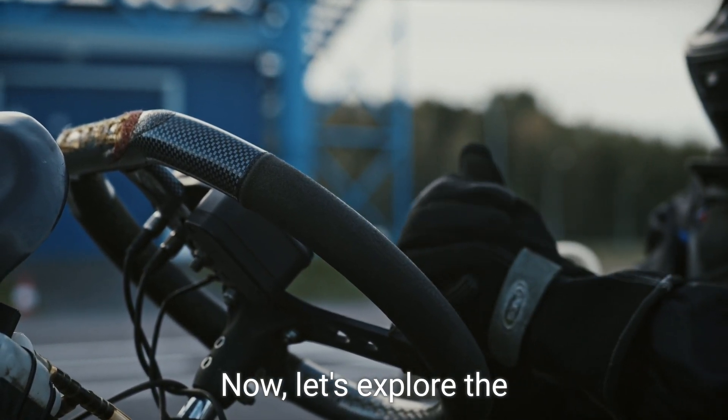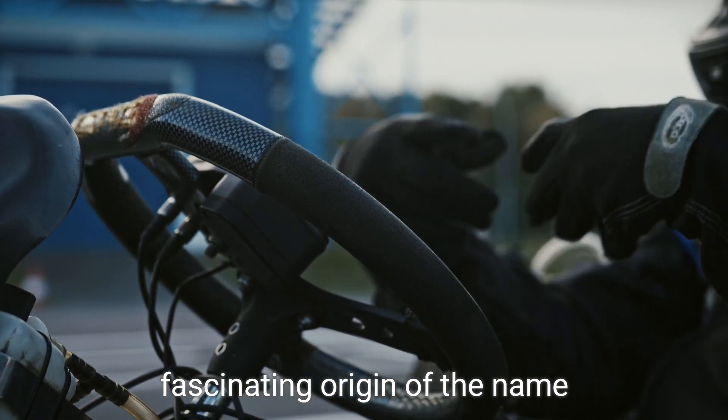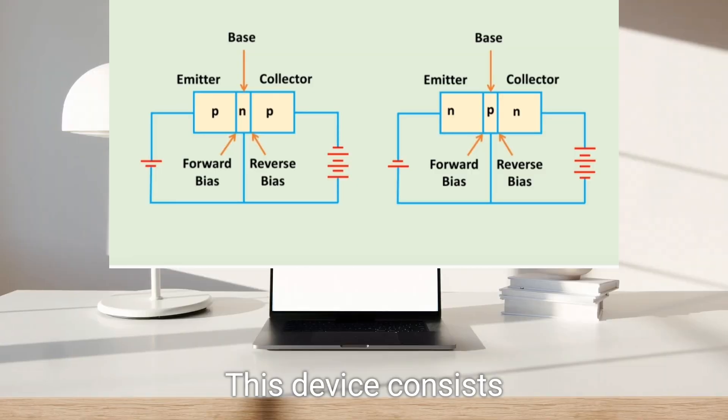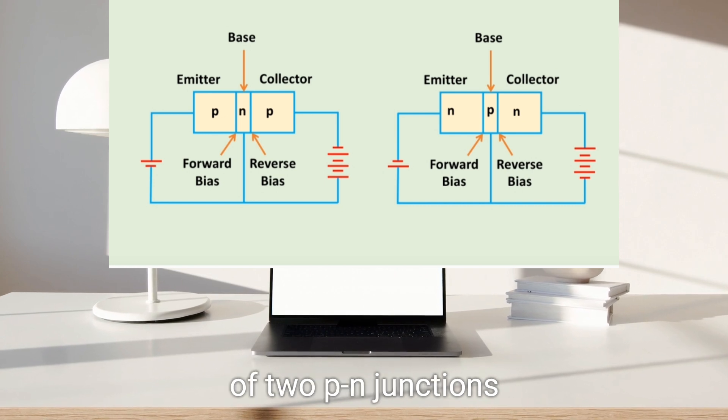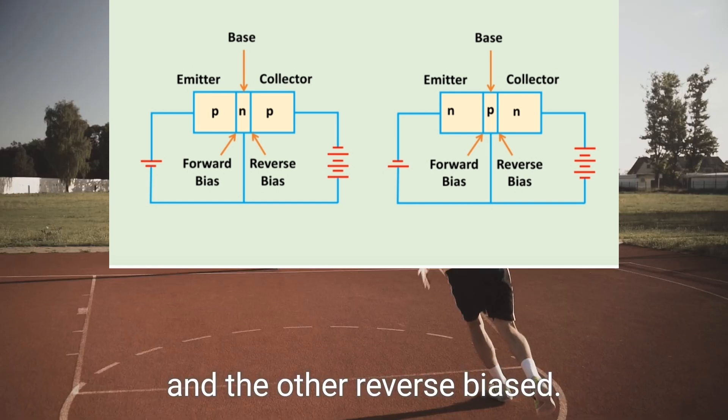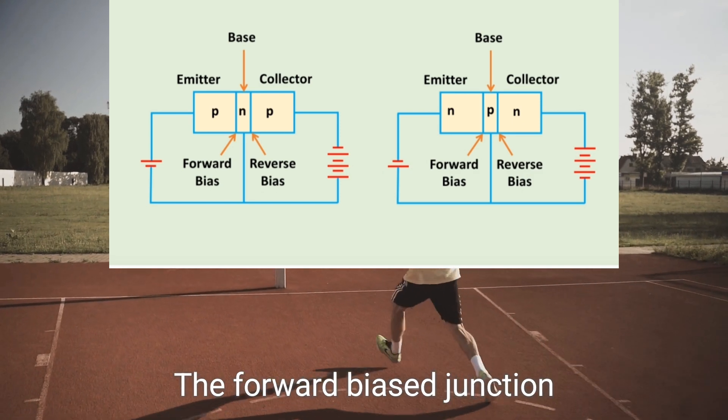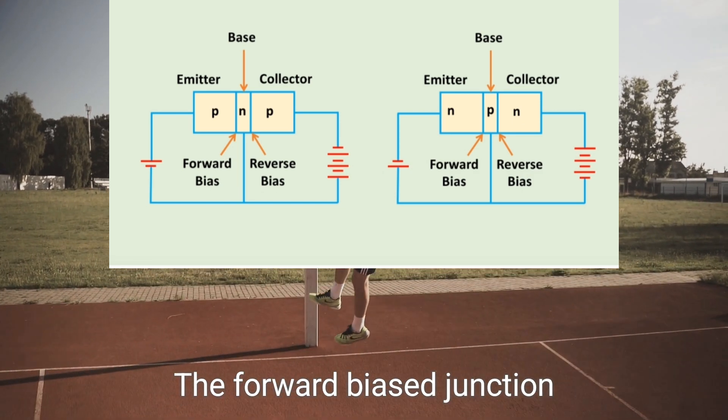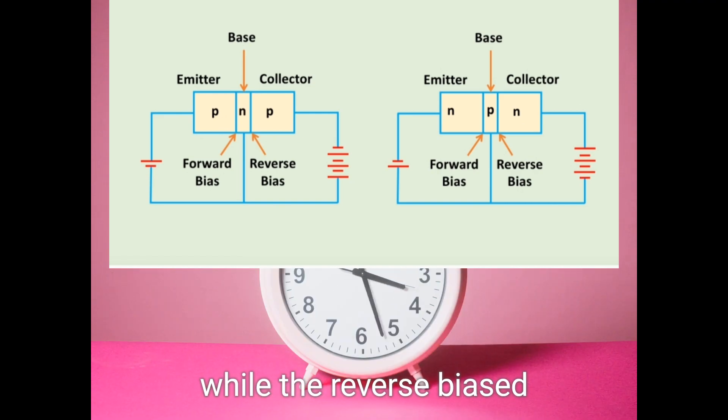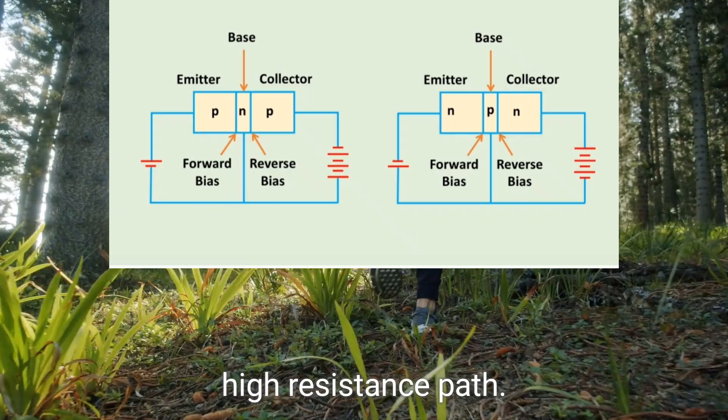Now let's explore the fascinating origin of the name transistor. This device consists of two PN junctions, one forward biased and the other reverse biased. The forward biased junction offers a low resistance path, while the reverse biased junction has a high resistance path.